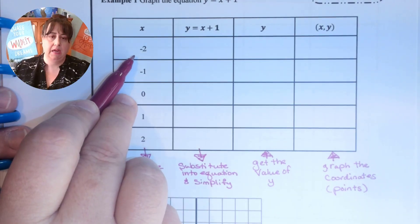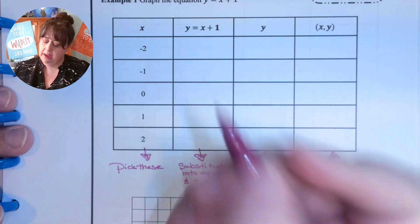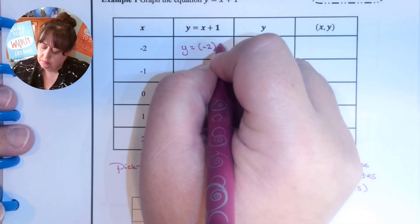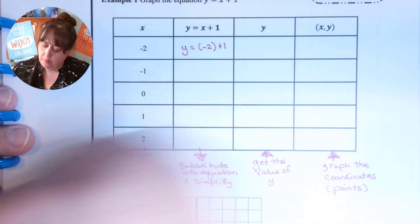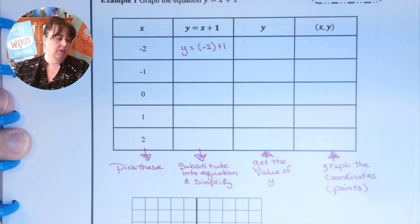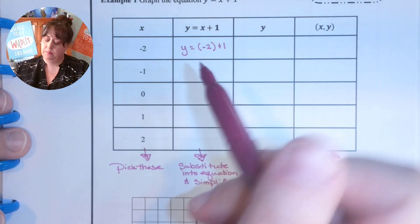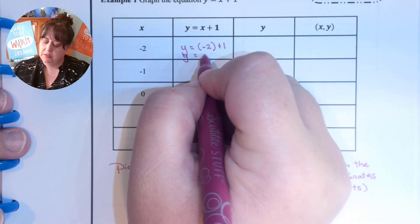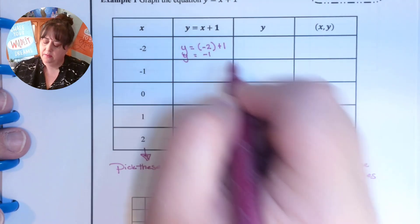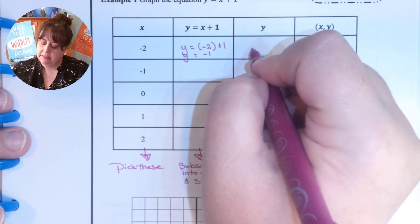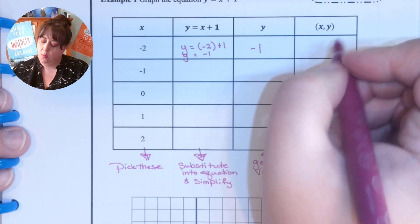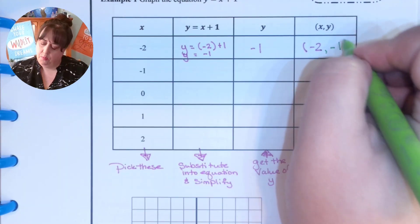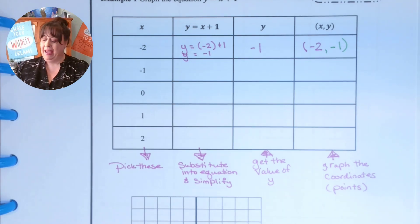Right here I'm picking negative two for x. So y equals negative two plus one. What is negative two plus one? Negative two plus one is negative one. So my value of y is negative one. So my ordered pair is negative two, negative one.